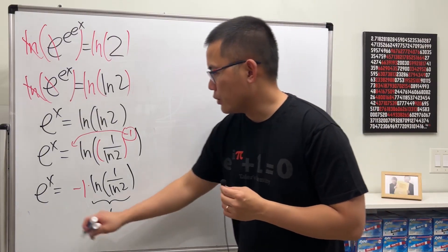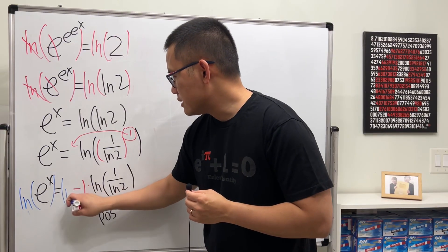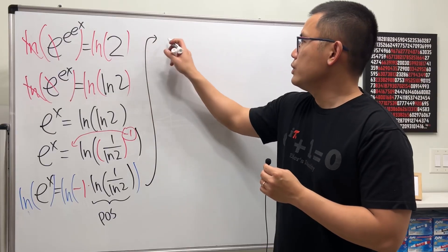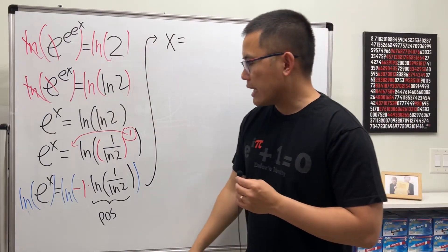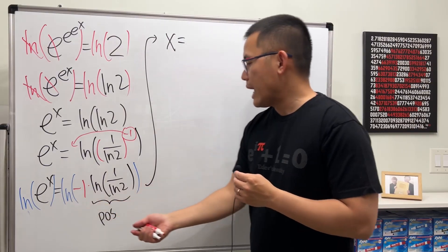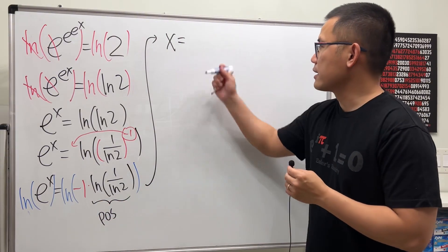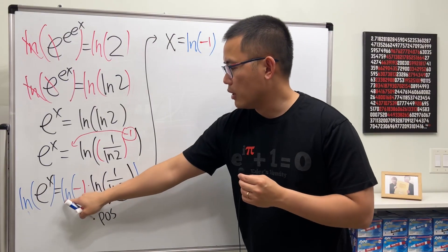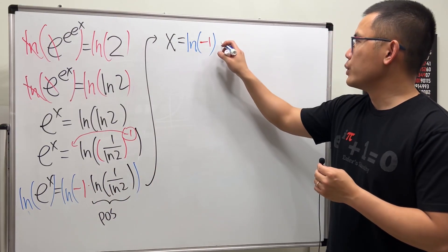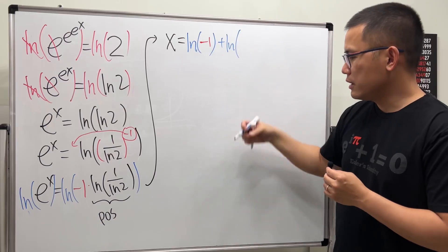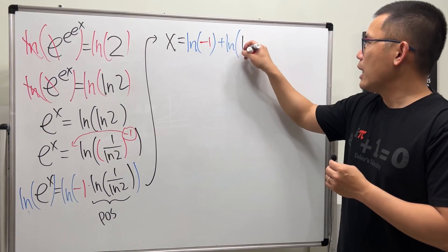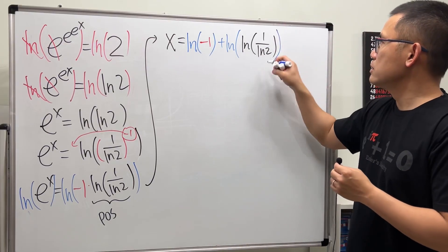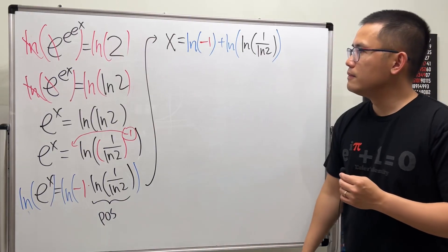And, if we want to continue to take natural log on both sides, this is technically a complex logarithm. On the left-hand side, we can say we have x. On the right-hand side, we can say, let's break this apart as ln of negative 1. And then, because we have a product inside, so, we'll just add ln of the next one, right? So, we add ln of the next one, which we have ln of 1 over ln(2), like this.